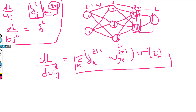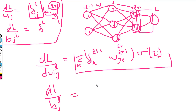Just as we saw for the bias in the output layer, the same is true here: dL/db_j(l) is simply delta_j(l). These are the parameters we have found, and we can use them to update the weights of our neural network.